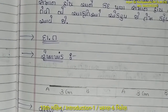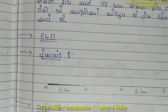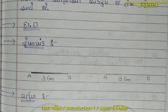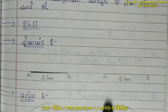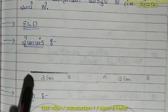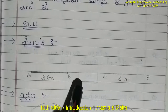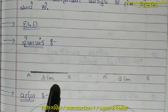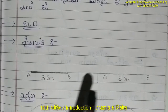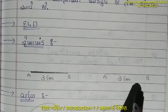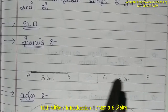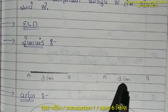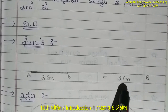દાખલા તરીકે વિદ્યાર્થી મિત્રો, 2 રેખા ખંડ દોરેલા છે. રેખા ખંડ AB અને આ રેખા ખંડ AB 3 સેન્ટિમીટર નો છે, અને આ બીજો રેખા ખંડ પણ AB 3 સેન્ટિમીટર નો છે.